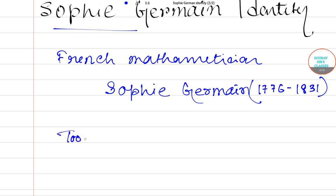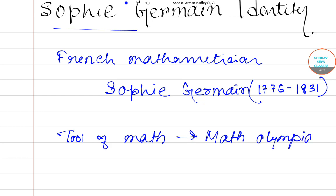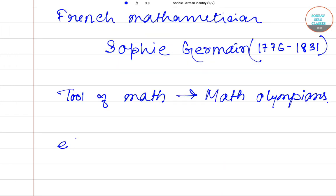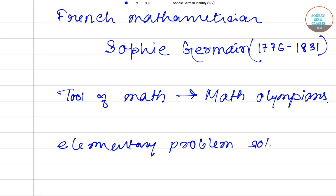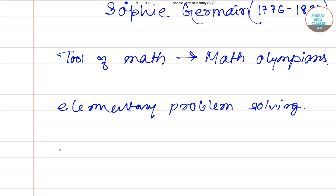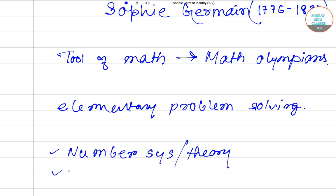The Sophie Germain identity is a tool of mathematics that is useful for math Olympians and persons who love elementary problem solving. It has a lot of applications in elementary number theory, algebra, and so on.